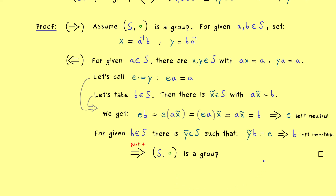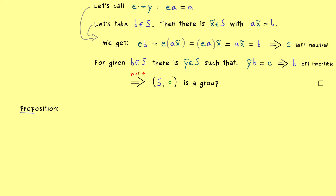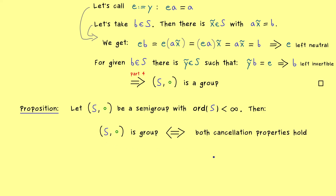Now as stated at the beginning, we can use these facts and connect them to the cancellation properties. The following proposition will be the main result of this video. What we need is just a semi-group, but it has to be of finite order — symbolically, ord(S) is less than infinity, meaning our semi-group has only finitely many elements. Such a semi-group is an actual group if and only if both cancellation properties — the left and the right — are satisfied. The claim is that if both cancellation properties hold, this also implies that we have an identity element and all inverses. This is not clear at all, so we should write down a proof.